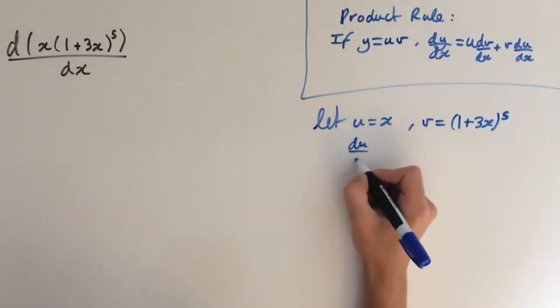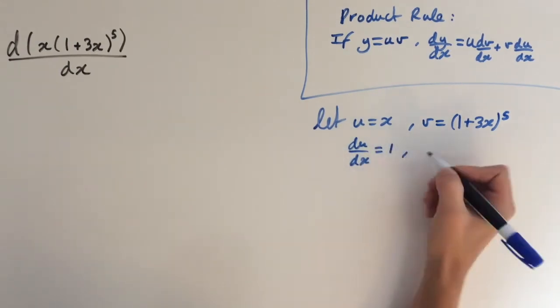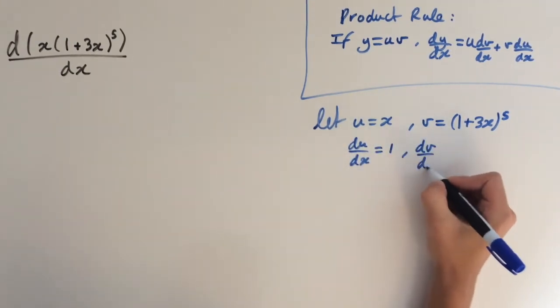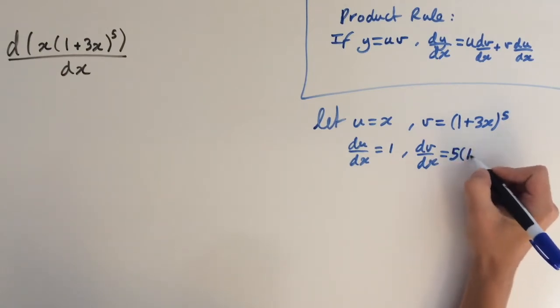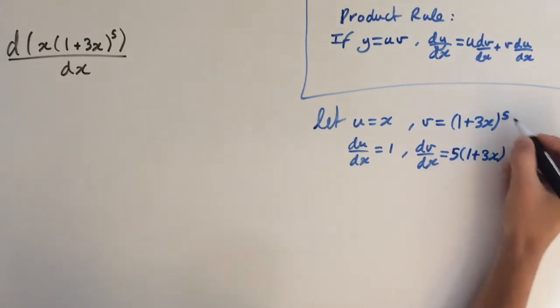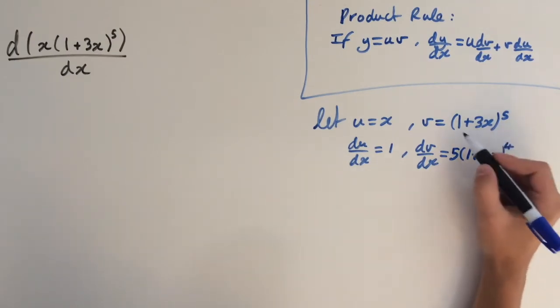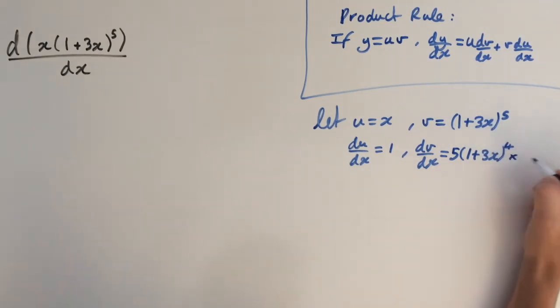So du dx equals 1 and dv dx equals, so bring the power down, 5 times 1 plus 3x to the power of 4. Bring the power down by 1 and then we need to multiply by the derivative inside here which is going to be 3.